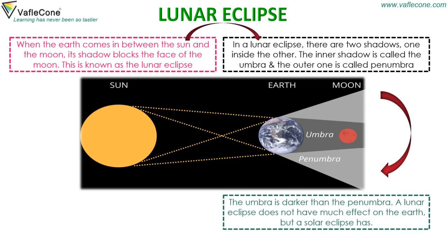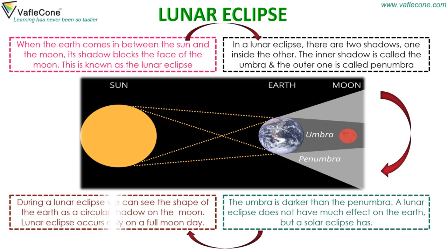The umbra is darker than the penumbra. A lunar eclipse does not have much effect on the earth, but a solar eclipse has. During a lunar eclipse, we can see the shape of the earth as a circular shadow on the moon. Lunar eclipse occurs only on a full moon day.